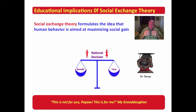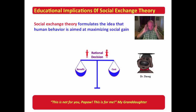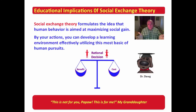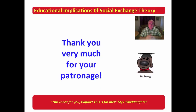The educational benefits of social exchange theory are very profound. Social exchange theory formulates the idea that human behavior is aimed at maximizing social gain. If you understand that this little calculator is going on in the brain — this decision-making process occurring in a rational fashion, weighing benefits against cost — then you can develop a learning environment which effectively utilizes this most basic of human pursuits. I hope that you've enjoyed this series of lessons on social exchange theory, developed in an organized fashion to let you understand the dynamics of what Homans presented.